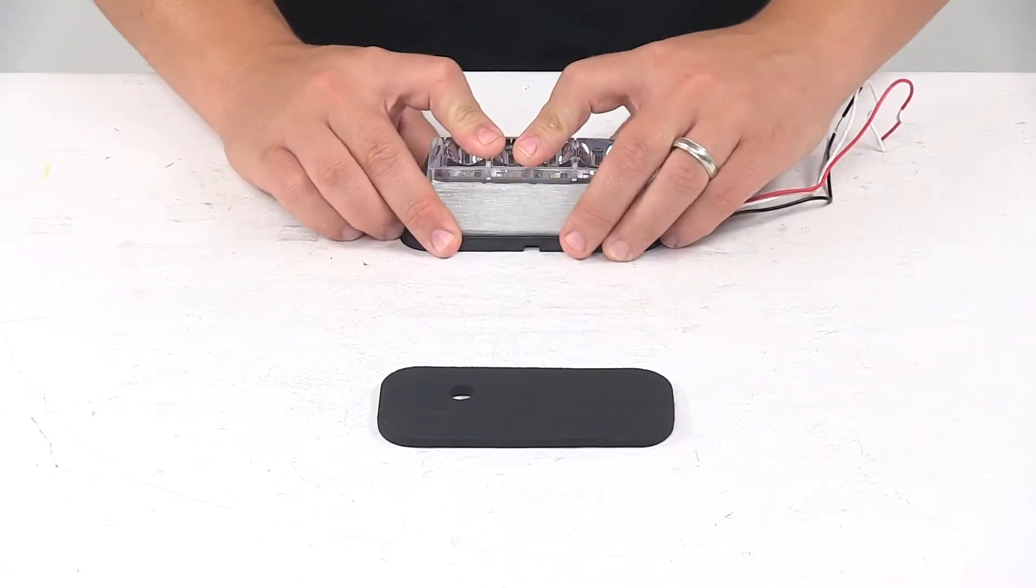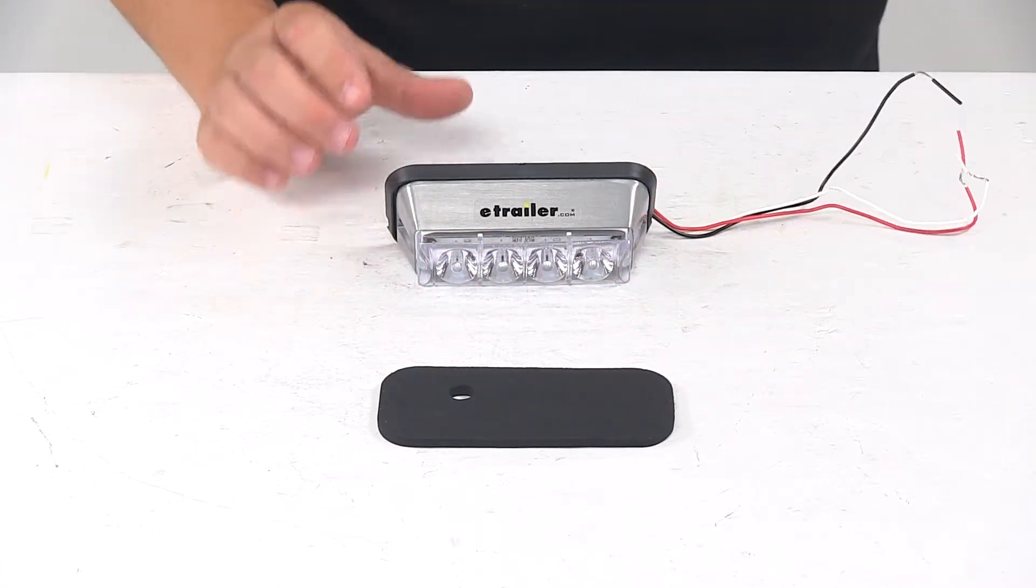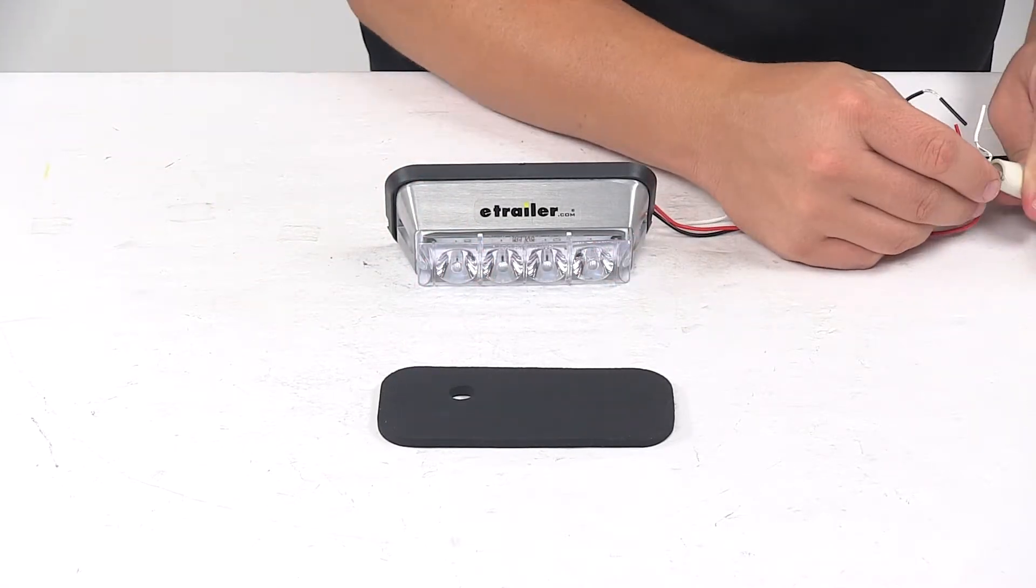We're going to go and hook it up to power. That way you can see what it looks like with some power running to it. And then we'll turn off our overhead lights so you can see it in a low light setting.